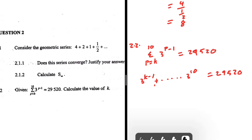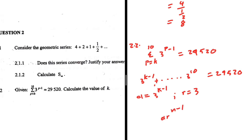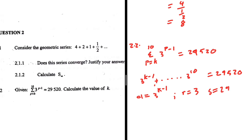From this we can deduce that a, the first term, equals 3 to the power k minus 1. We can also figure out r, the common ratio. Since this is geometric and the general form is a times r to the power n minus 1, we can see that a equals 1, r equals 3, and the exponent p minus 1 corresponds to n minus 1. We have a and r, and the sum from k to 10 equals 29520, but we don't yet know the number of terms.